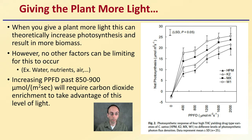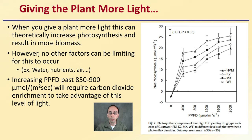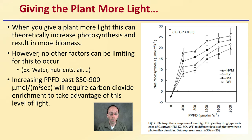Those other factors can include water, nutrients, air, carbon dioxide, and a few other things. Increasing PPFD past 850 to 900 micromoles per meter squared per second will require carbon dioxide enrichment to take advantage of this level of light. So just keep that in mind.